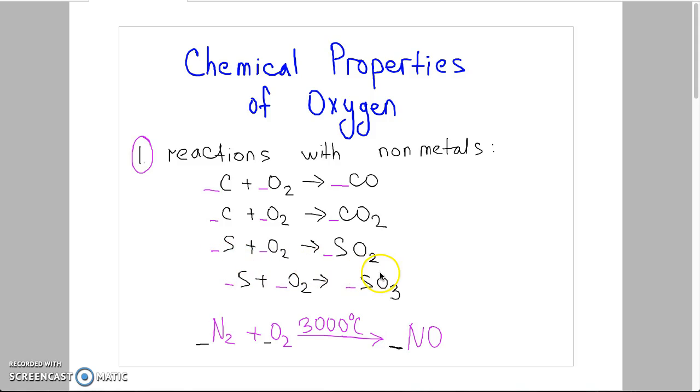When sulfur reacts with oxygen, in products we can have sulfur dioxide and sulfur trioxide. Reaction with nitrogen is possible only at high temperature. Here we can see the temperature needs to be 3000 Celsius degrees, and the product will be nitrogen monoxide.